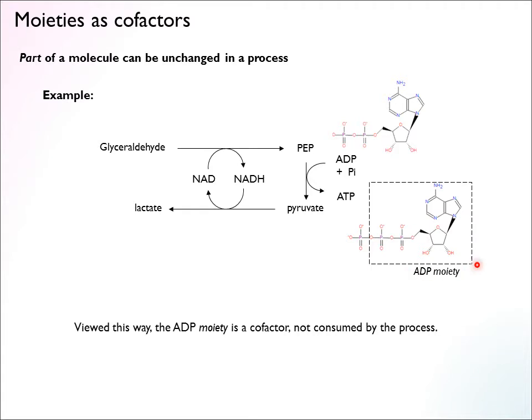This entire ADP part stays the same throughout the process, and the only product is really the phosphate group that is added on. In energy metabolism, the phosphate group continues to cycle: it gets phosphorylated, tagged onto ADP to make ATP, and then removed again in reactions that utilize energy. The carrier part — the ADP moiety — stays constant, so you can think of that as a cofactor as well.